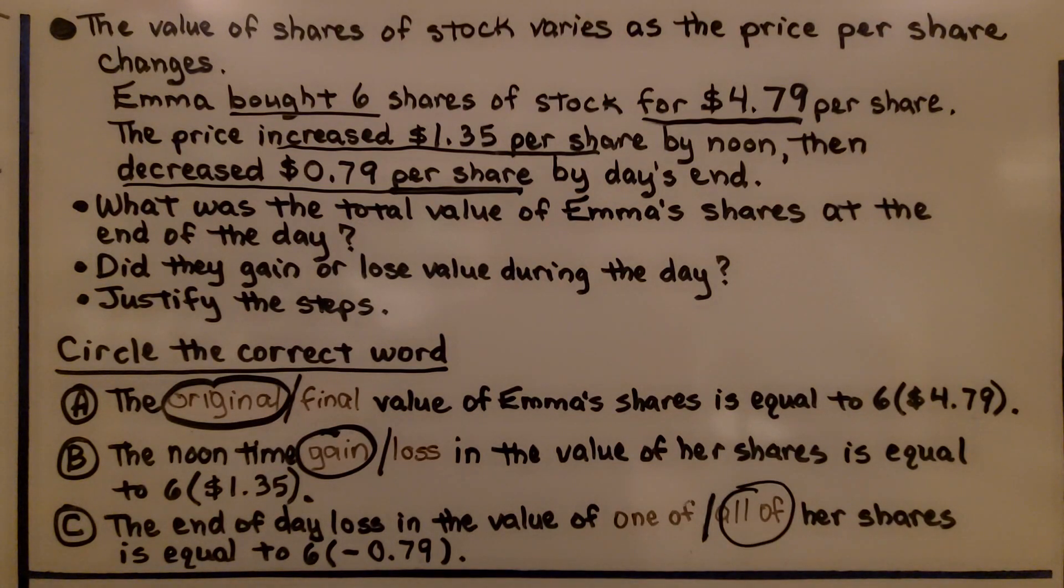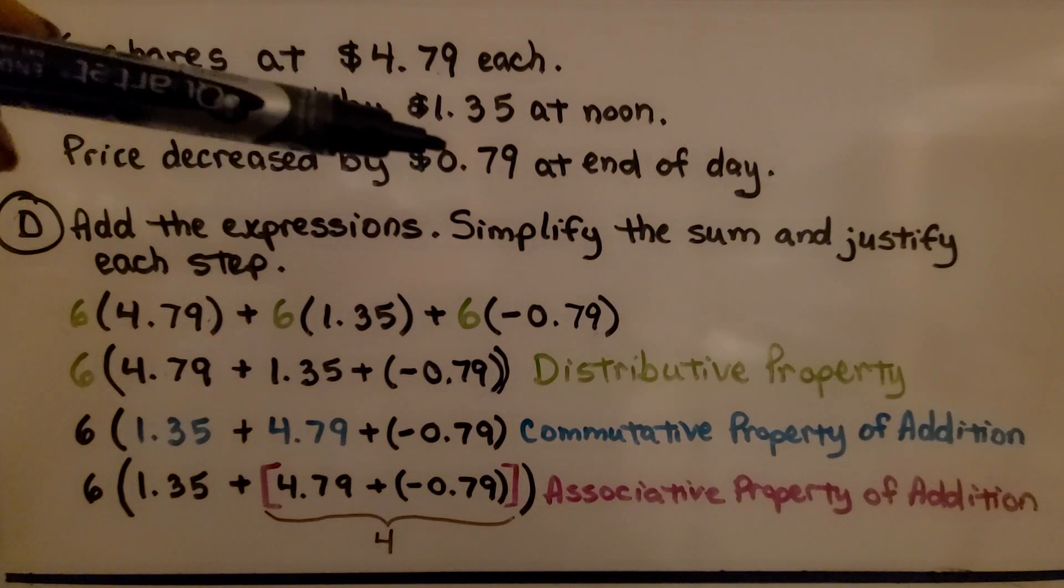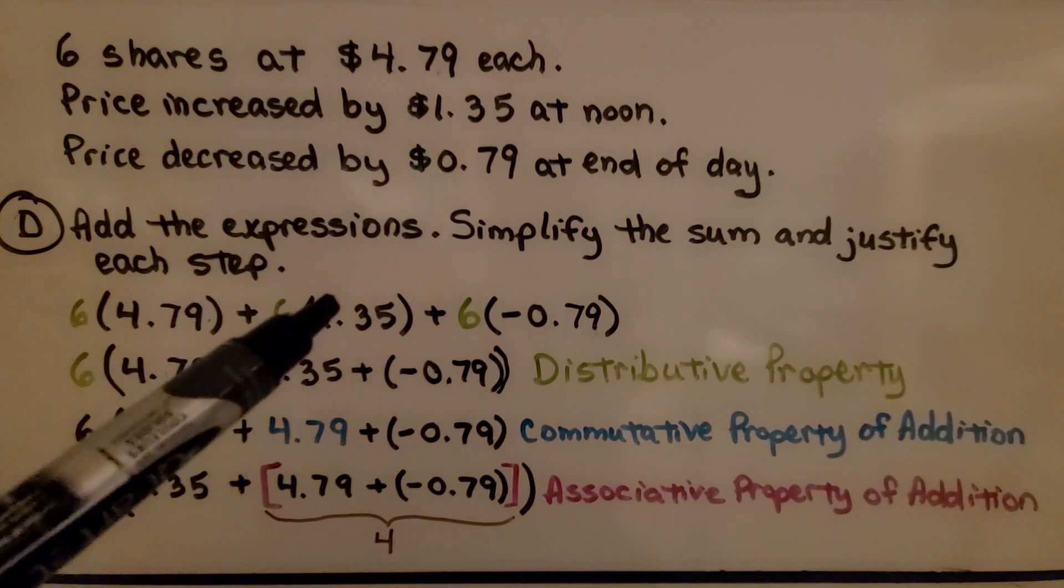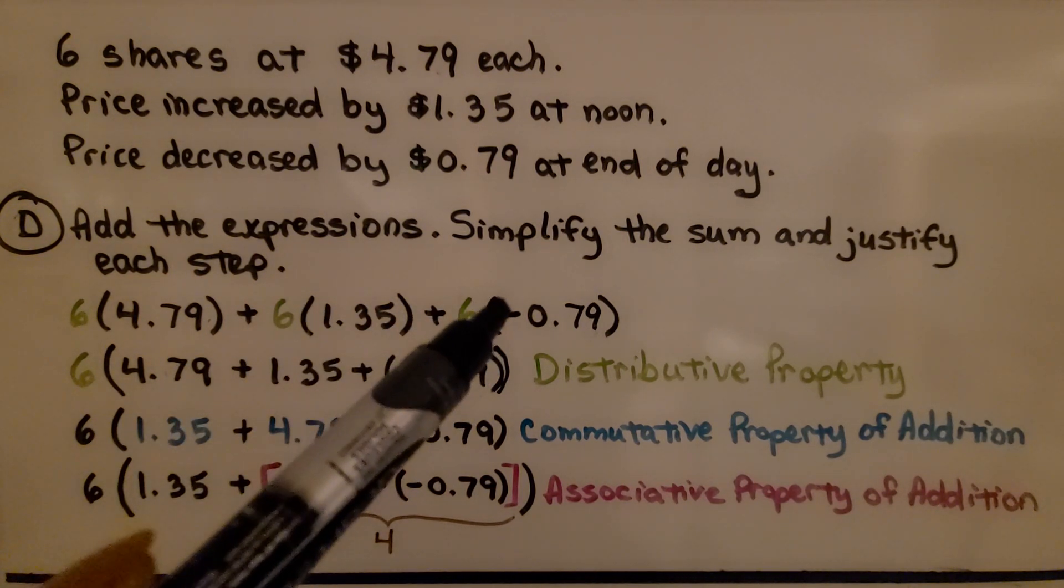Okay, keep following me here. So we know she bought 6 shares at $4.79 each. We know the price increased by $1.35 at noon. That was for each one. And then the price decreased by $0.79 at the end of the day, and that's for each one. D is saying add the expressions, simplify the sum, and justify each step. So we have 6 times $4.79, that's what she initially paid and bought for her shares, plus 6 times $1.35, plus 6 times a negative $0.79.